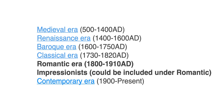Let's talk a little bit more about the Romantic era. So far in our journey through the history of classical music, we've touched upon the Medieval era, the Renaissance era, the Baroque era, the Classical era, and now we come to the Romantic era. After this comes the Impressionists, who could be included under both Romantic and Modern, and then we come to the Contemporary or Modern era.